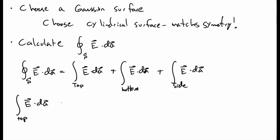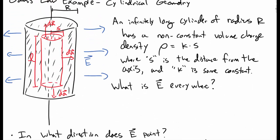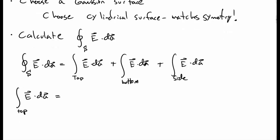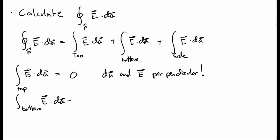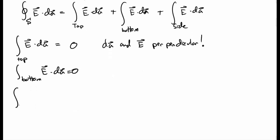Let's calculate these individually. The electric flux through the top — notice that dA and E are perpendicular to each other, so you just get zero for the flux through the top. By similar reasoning, the flux through the bottom is also zero. So we just need to compute the flux through the side, E dot dA through the side.